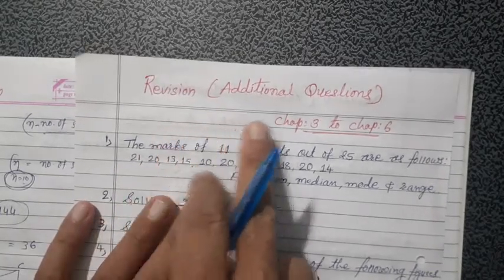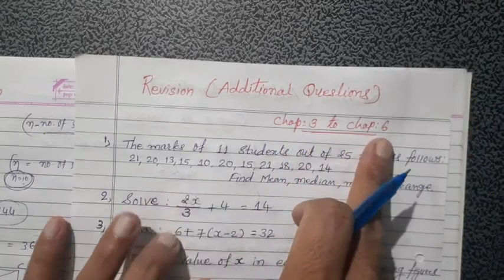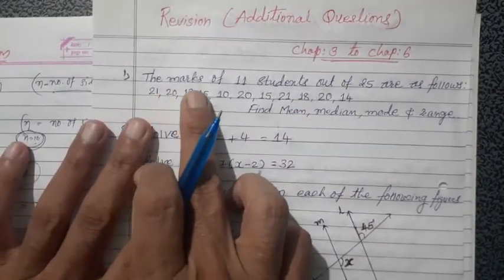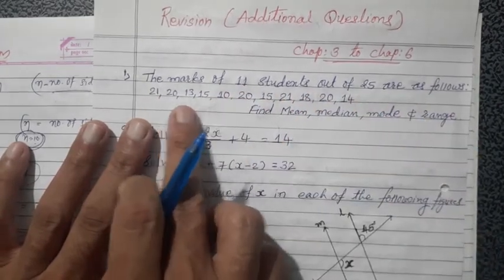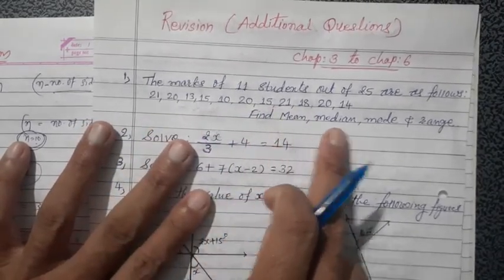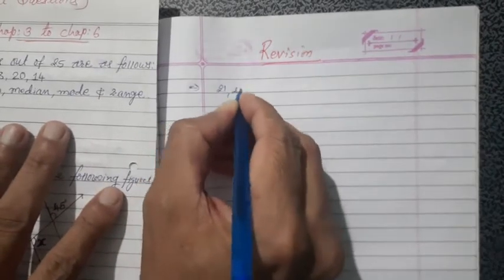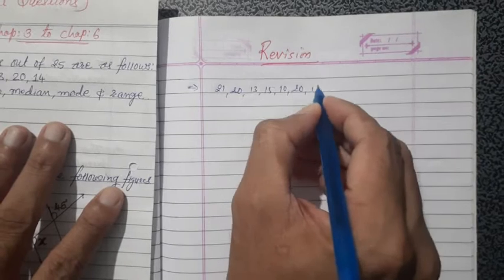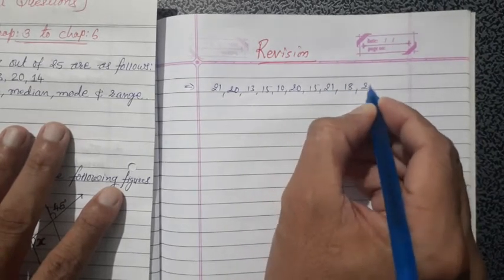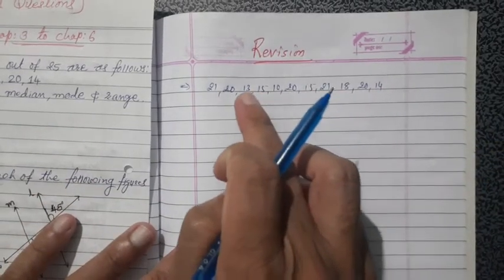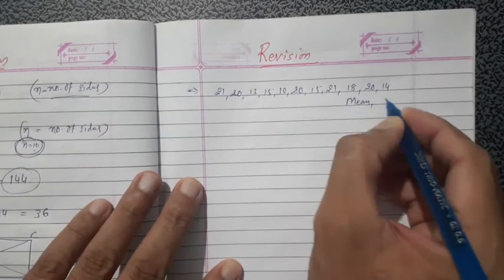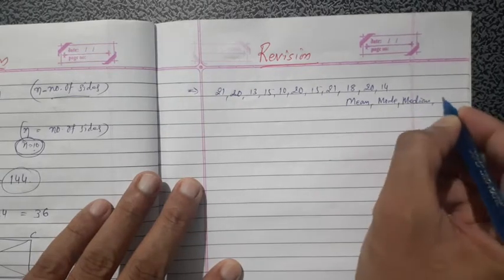Hello students. Today we saw additional questions from chapter 3 to chapter 6 — some special questions. The first one: the marks of 11 students out of 25 are given. The marks are 21, 20, 13, 15, 10, 20, 15, 21, 18, 20, and 14. Find the mean, median, mode, and range.